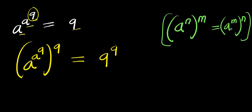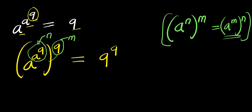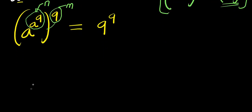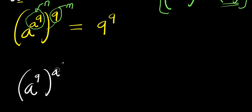So the exchange of powers here — let a^9 represent m and 9 represent n. I can switch them: the 9 comes inside while the other goes outside the bracket. So what I get is a to the power of 9, raised to the power of a^9, and this equals 9 to the power of 9.